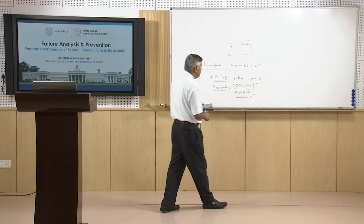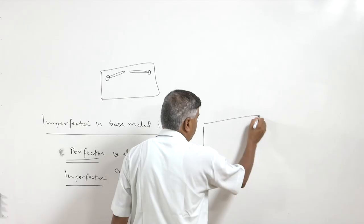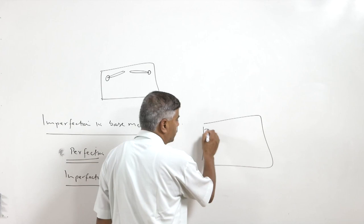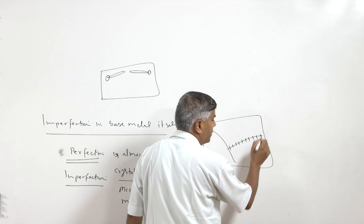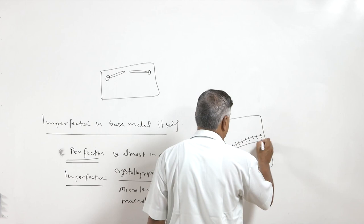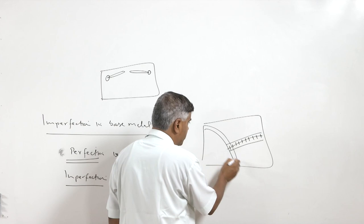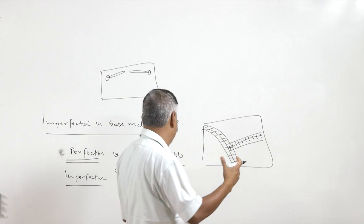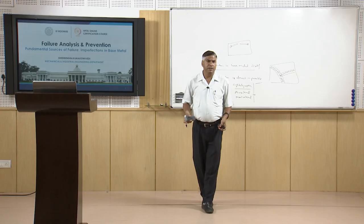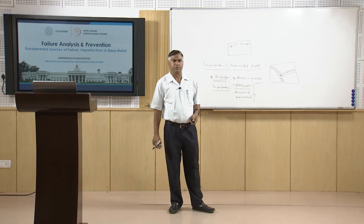Grain boundaries are also a form of imperfection because at the grain boundary the arrangement of atoms is highly disordered and random — essentially amorphous, not an ordered arrangement. This grain boundary area forms a region of many atomic imperfections. Three-dimensional defects may be in the form of pores or amorphous constituents.